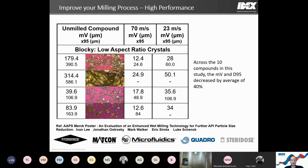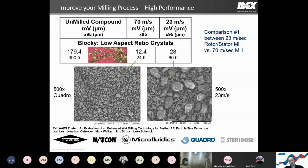Merck also published electron microscope images showing differences in one particular product. At this level you can see how much change was achieved — no large particulate remain. This is a testament to how well the HV size reduces en masse, eliminating larger pieces and creating a uniform particle size. It's not just that it's small; you get much more uniformity. In this industry, uniform particle size is very beneficial for drug delivery and drug composition.